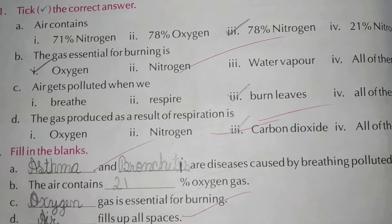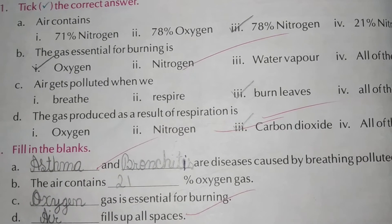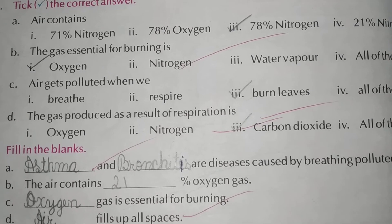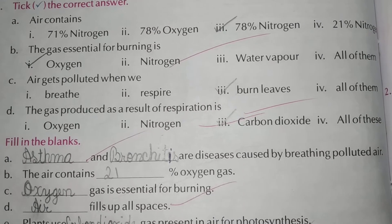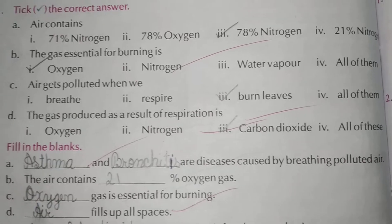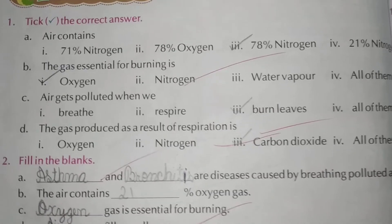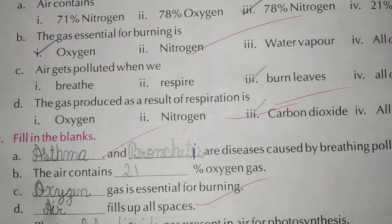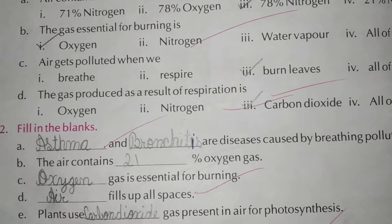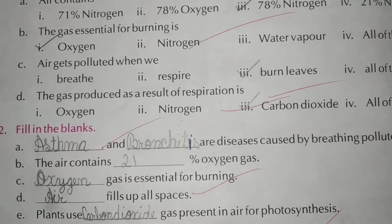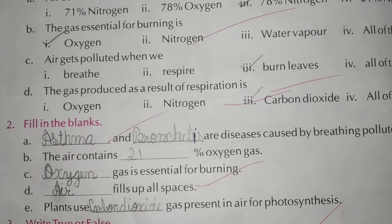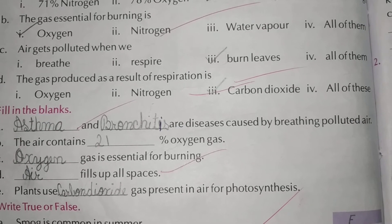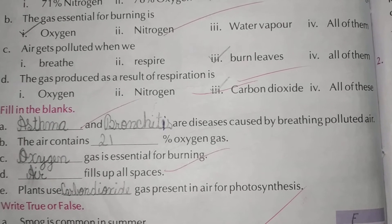Number 2: The gas essential for burning is oxygen. Oxygen is the right answer — tick oxygen. Number 3: Air gets polluted when we burn leaves. Burn leaves is the right answer.